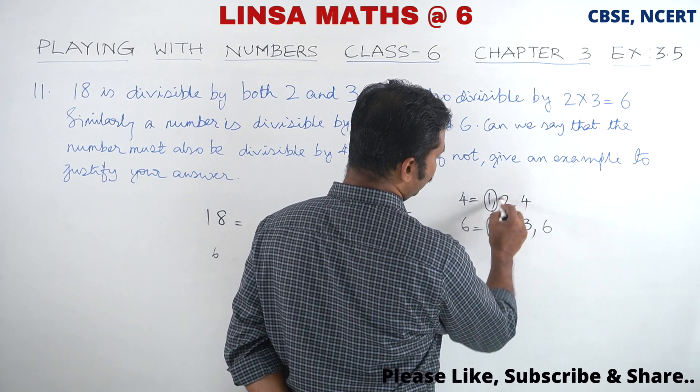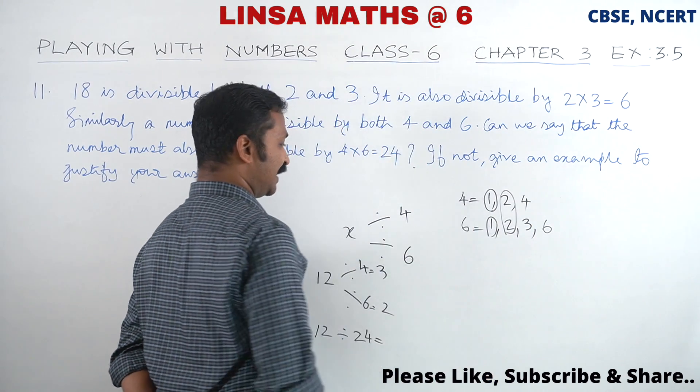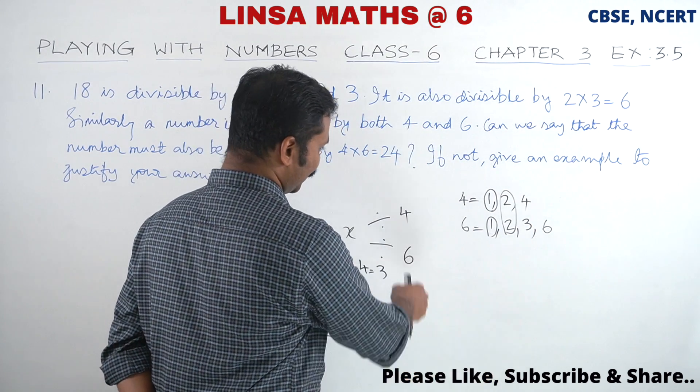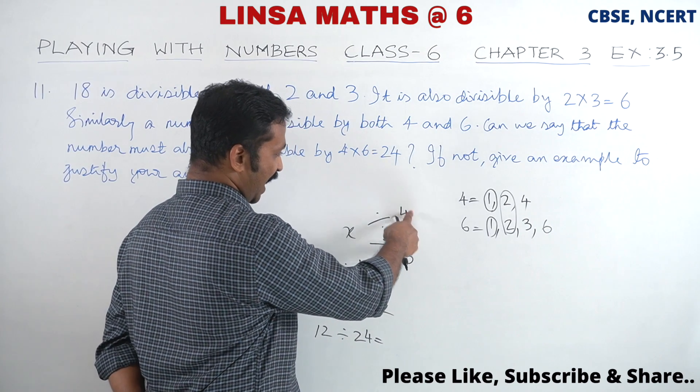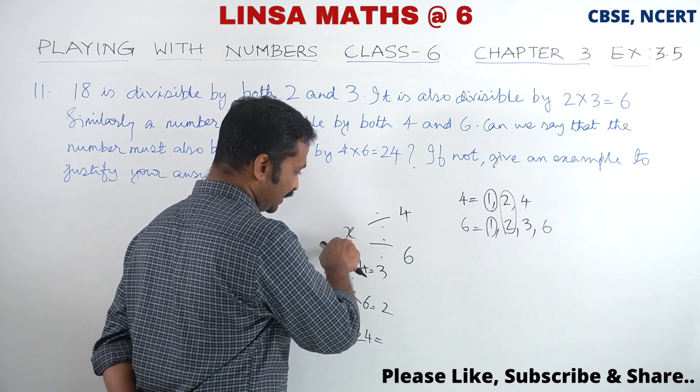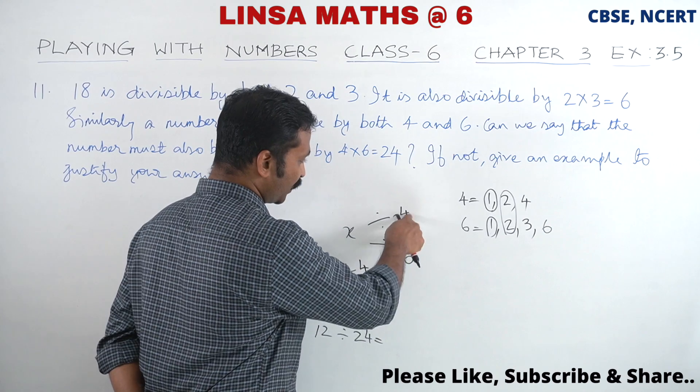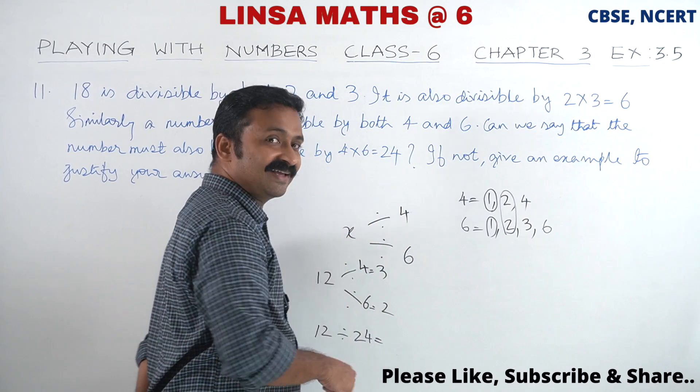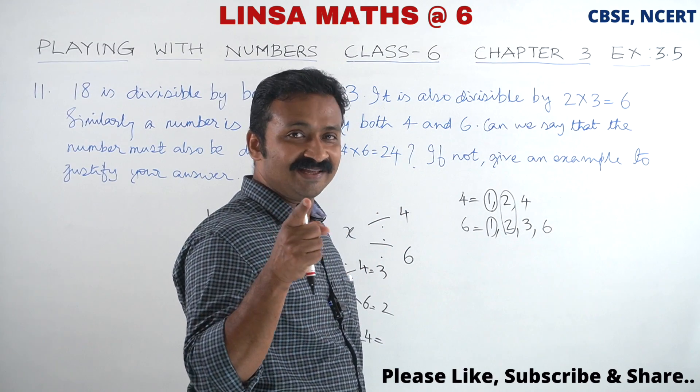If two numbers are co-prime and that number is divisible by the given numbers, then their product will also be divisible by the given number. That's why we use that rule.